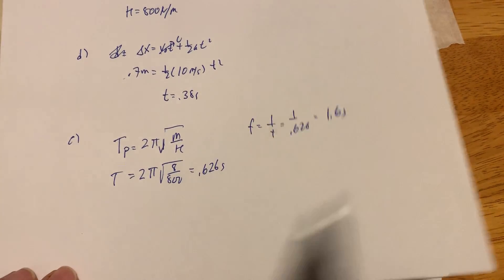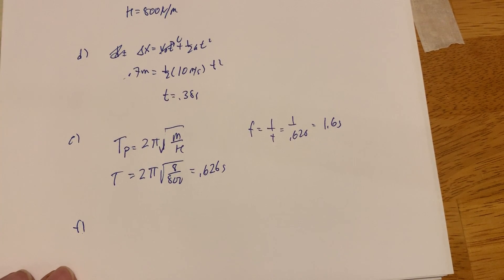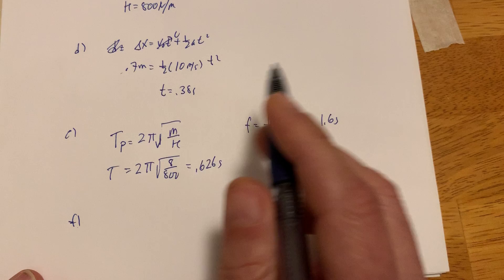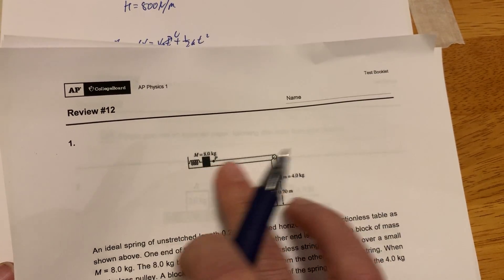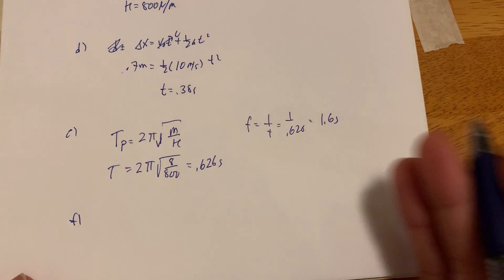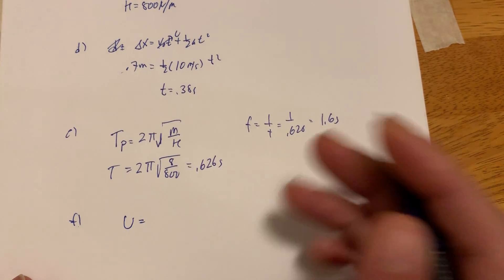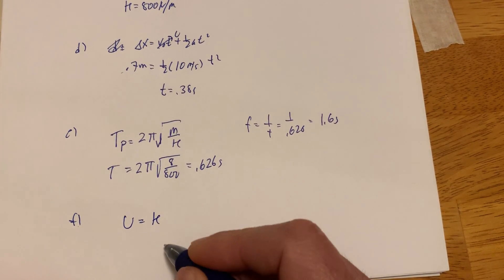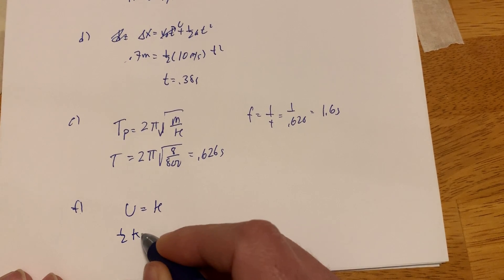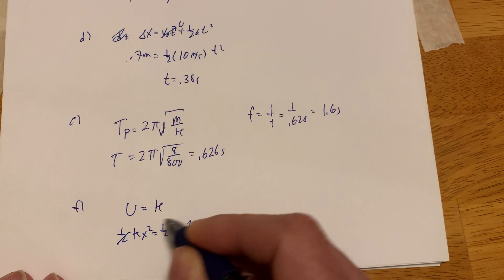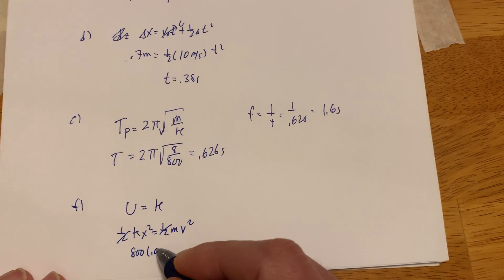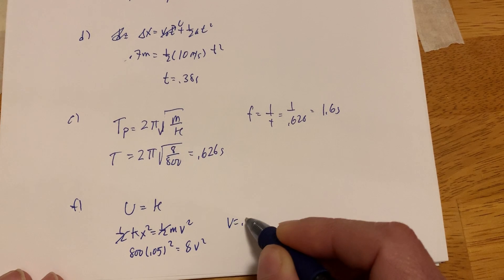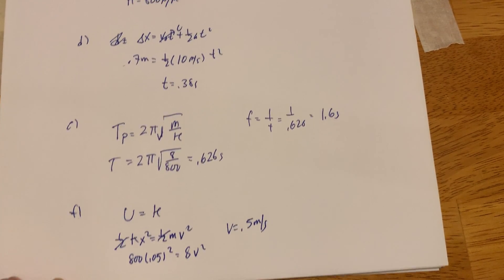Part F: calculate the maximum speed of the 8 kilogram box. Once the string is cut, this thing will wiggle back and forth. When it's at the farthest point — 0.05 meters — it has potential energy. When it zips back to the equilibrium position it's going the fastest; all that potential energy is converted to kinetic energy. So ½kx² equals ½mv²: 800 times 0.05 squared equals 8v², and I got something like 0.5 meters per second.